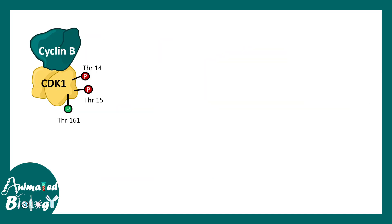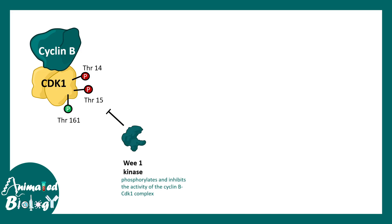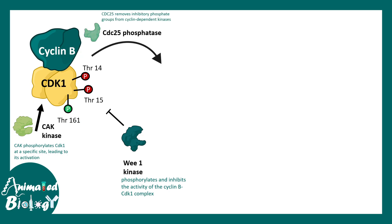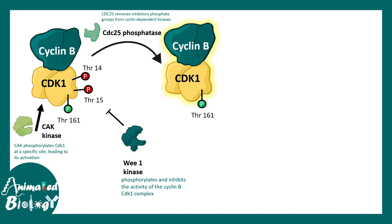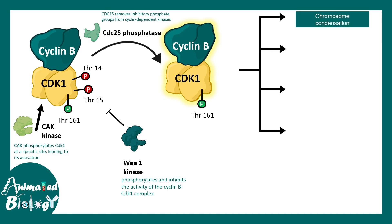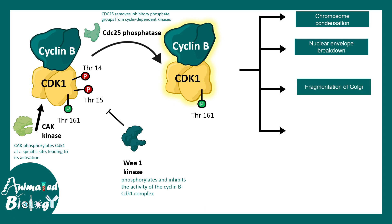The M phase cyclin is cyclin B with CDK1. Cyclin B/CDK1 has different phosphorylation sites: threonine 14 and threonine 15 are inhibitory sites, while threonine 161 is an activatory site. Kinases like WEE1 kinase perform inhibitory phosphorylation, while activatory kinases such as CAK kinase and activatory phosphatases remove inhibitory phosphorylation to activate the complex. When cyclin B/CDK1 is activated, it leads to chromosome condensation, nuclear envelope breakdown, fragmentation of the Golgi, and spindle apparatus formation.